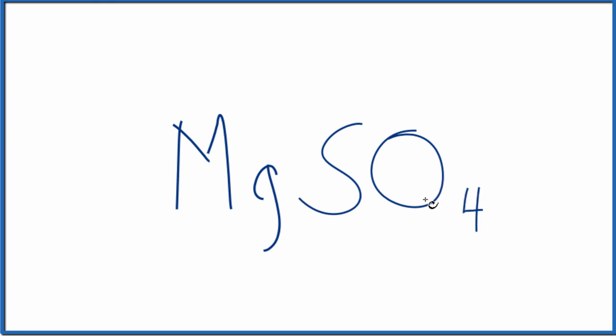We need to think about the charge. Magnesium is in group two, so it forms two plus ions. For the sulfate ion, you really just have to memorize that SO4 has an ionic charge of two minus. This is a polyatomic ion.